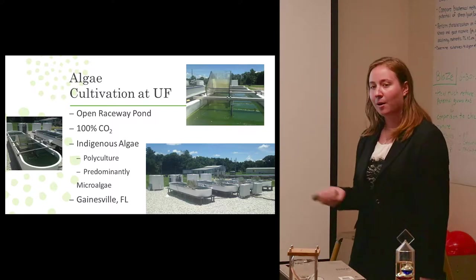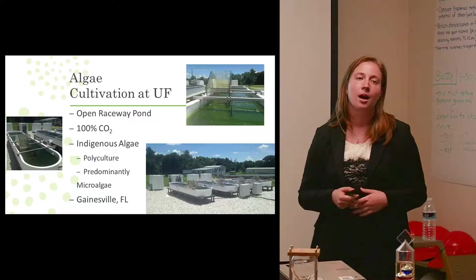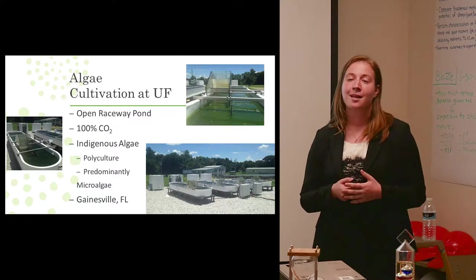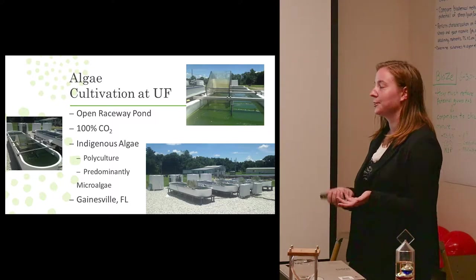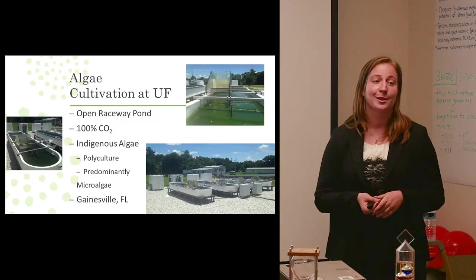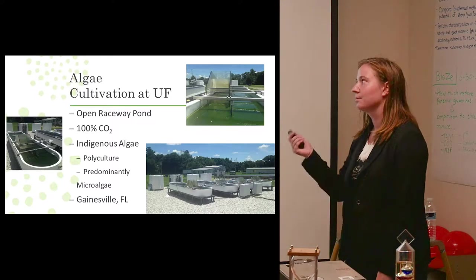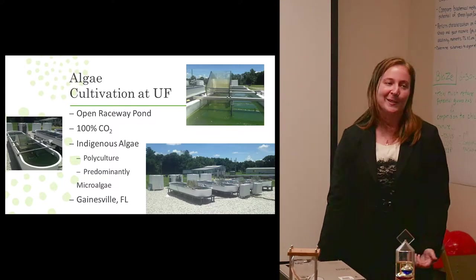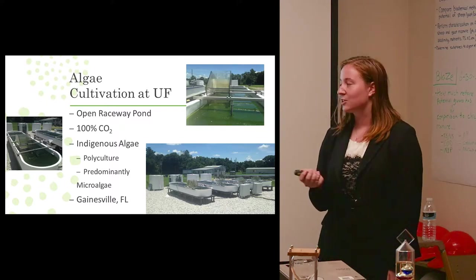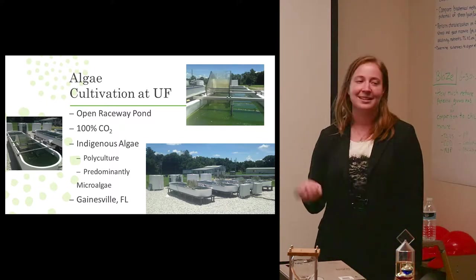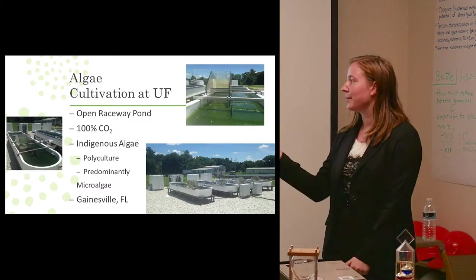And these four ponds, as was also previously mentioned, is indigenous algae. It comes from around different local areas and its constituents or components come from a polyculture. So there's many different types of species present in our ponds and it's a predominantly microalgae species. And what's different from Josh and I, because we have very similar projects, but mine is grown on 100% CO2 and it is in Gainesville off of polyculture and microalgae.